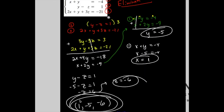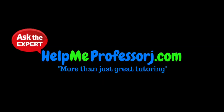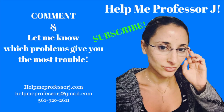If you were unable to solve for any variable and got a true statement, that would be the infinite solution case. If you got a false statement, it would be the no-solution case. This example was the one-solution case.